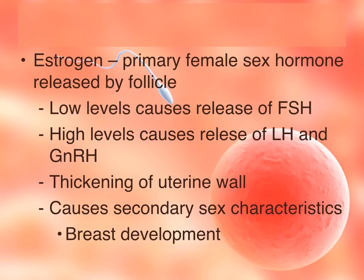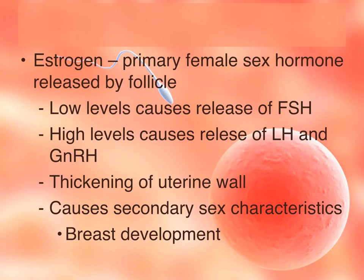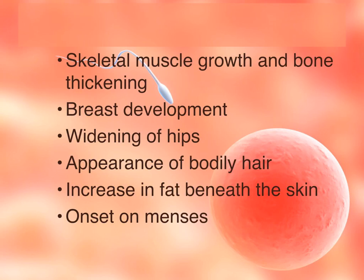Estrogen is the primary female sex hormone, released by the developing follicle. Low levels of estrogen trigger the release of follicle-stimulating hormone, while high levels cause the release of luteinizing hormone and gonadotropin-releasing hormone. Other effects of estrogen include thickening the uterine wall in preparation for pregnancy, and causing secondary sex characteristics such as breast development, skeletal muscle and bone growth, widening of the hips, appearance of body hair, increased fat beneath the skin, and onset of menses.